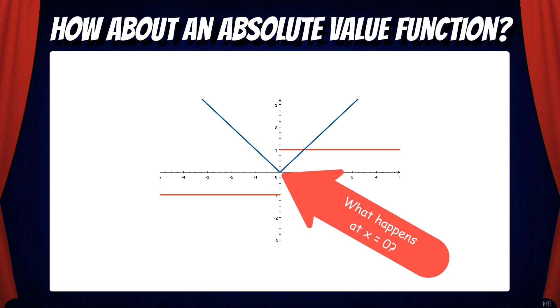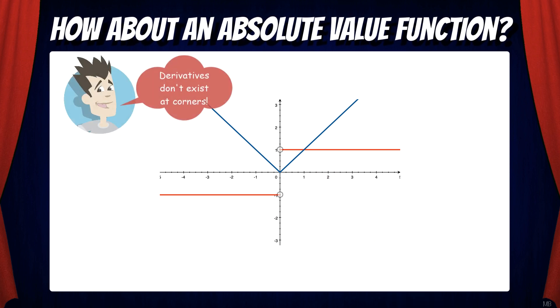But what about x equals 0? As it turns out, derivatives don't exist at corner points. That means the derivative function for the absolute value of x is a piecewise function. We have a discontinuity at x equals 0.